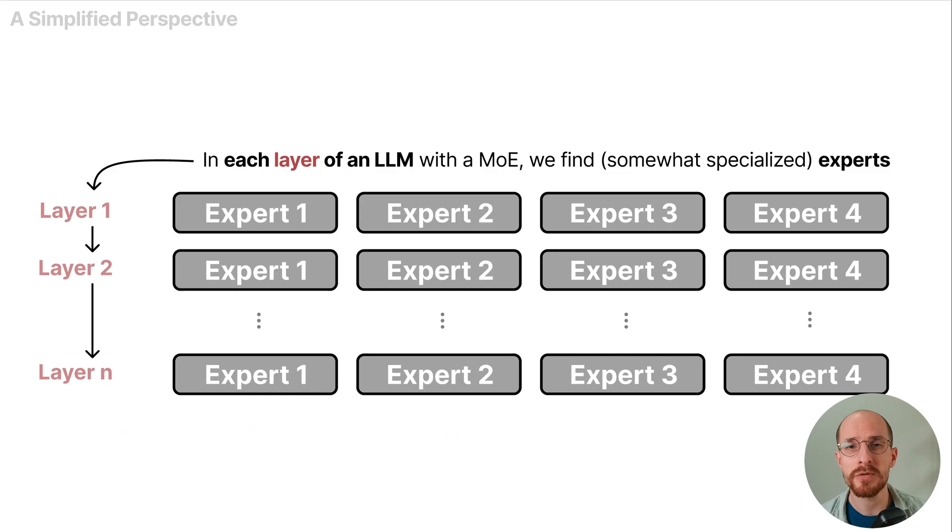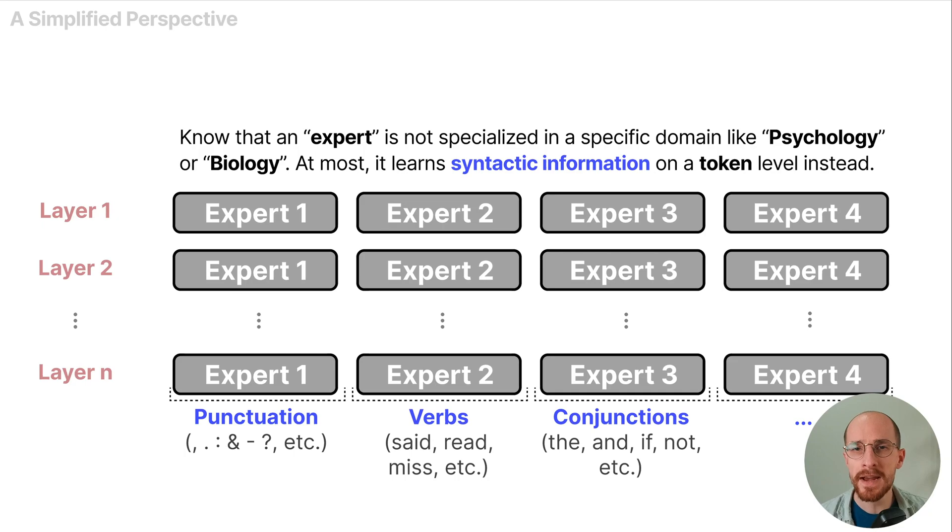In each layer of an LLM with a MoE we find somewhat specialized experts. But know that an expert is not specialized in a specific domain like psychology or biology and at most it learns syntactic information on a token level instead.